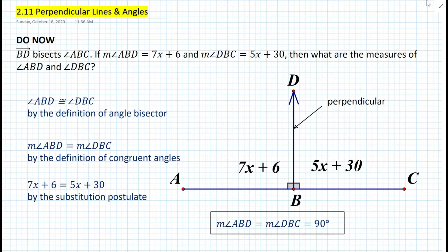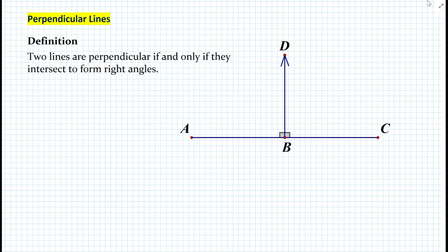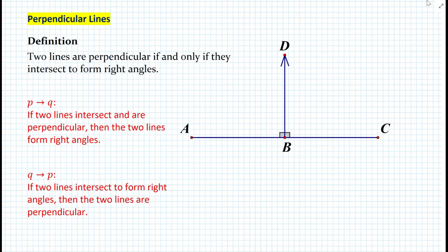This brings us to the definition of perpendicular lines. A true definition is a biconditional statement. Since we have 90-degree angles — right angles — the definition must include that. The definition is: two lines are perpendicular if and only if they intersect to form right angles. It's important to state that they intersect, since lines can also not intersect. The conditional statement is: if two lines intersect and are perpendicular, then they form right angles. Its converse is: if two lines intersect to form right angles, then the two lines are perpendicular.